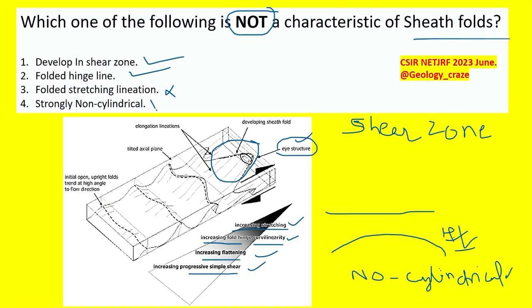Strongly non-cylindrical - yes, it is non-cylindrical. Here we see the hinge line is curved, so we can say that it is non-cylindrical. So in this way we can go.